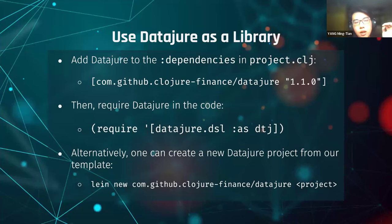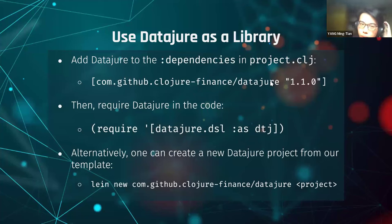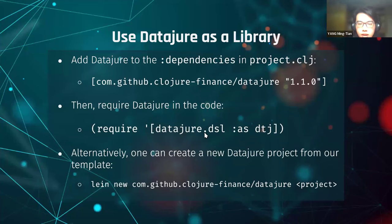Now we show the usage of DataJure. Just like any usual library, you can use DataJure as a library in your project — add DataJure to the dependencies in your project file, then require DataJure in the code. Usually we choose the alias DTJ for DataJure.